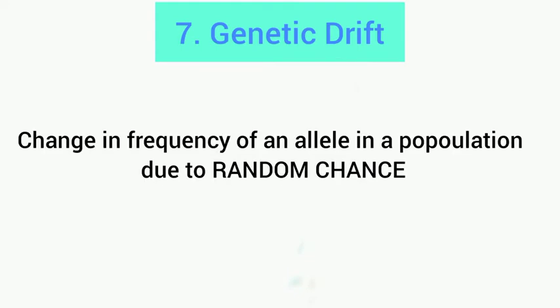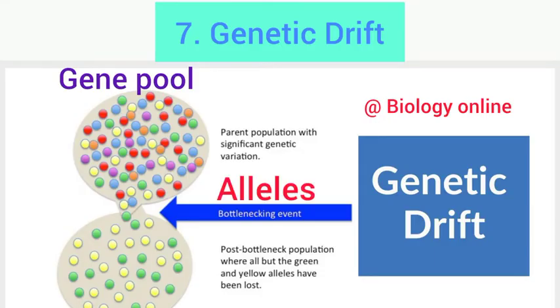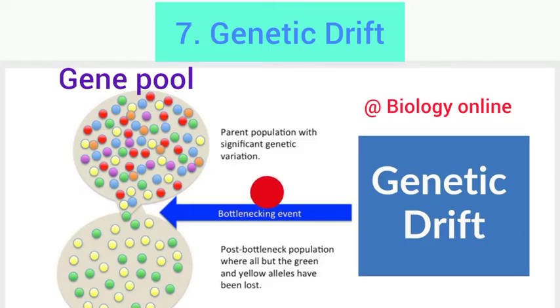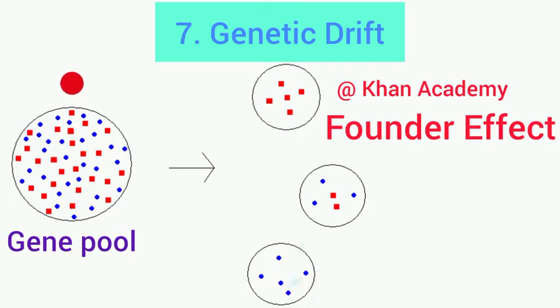Genetic drift is the change in frequency of an allele in a population due to random chance. For example, we can see different colors in the gene pool — different alleles — but something happened: this is called the bottleneck effect. It may be a natural disaster like a flood, fire, or a disease wiping out an entire population, so only a few individuals with few genes survive into the next population.